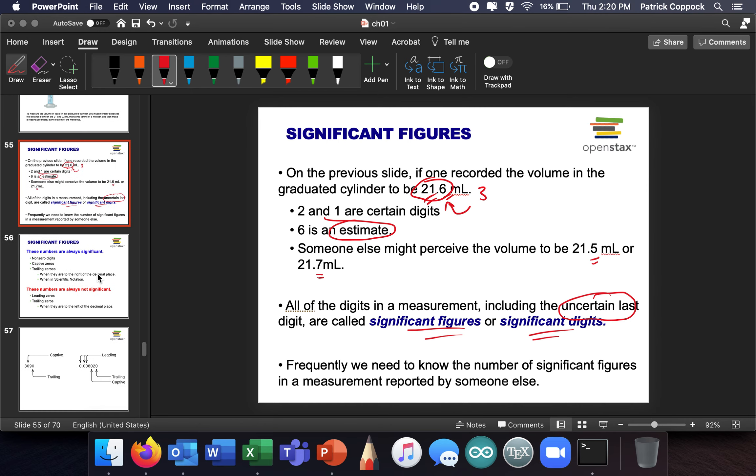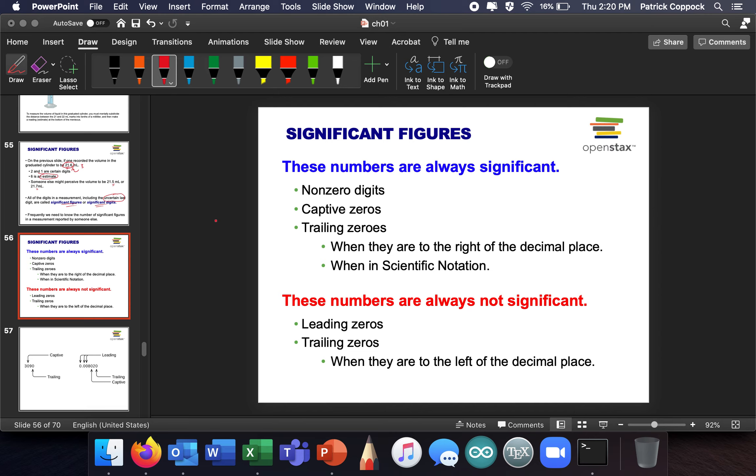All right, so let's move on now. These numbers are always significant: Anything that's not 0 is always significant. Any 0s that are in between and any 0s that are after, when they are to the right of the decimal place and when they're in scientific notation. So these numbers are always not significant: Leading 0s, that's 0s before a number, 0, 0, 4, 4. These are insignificant. And trailing 0s when they're to the left of the decimal place, unless there's a decimal place. So there's a little trick right there.